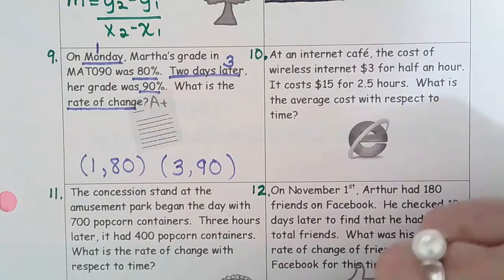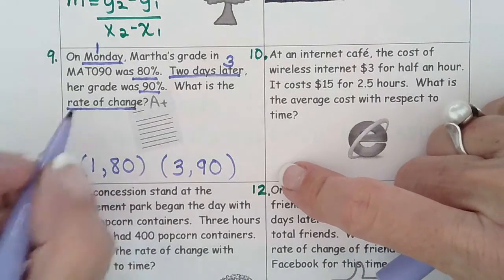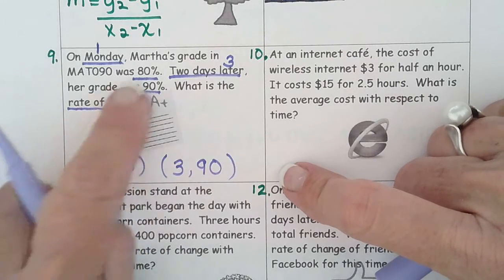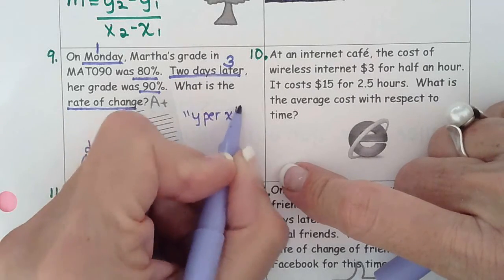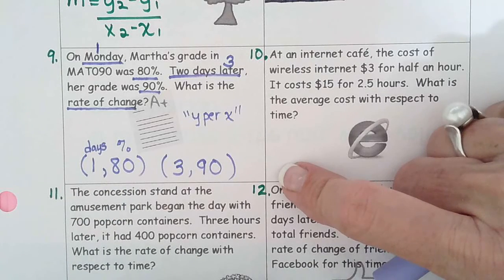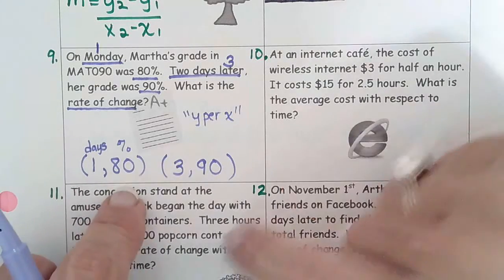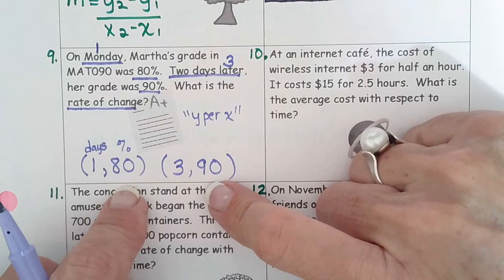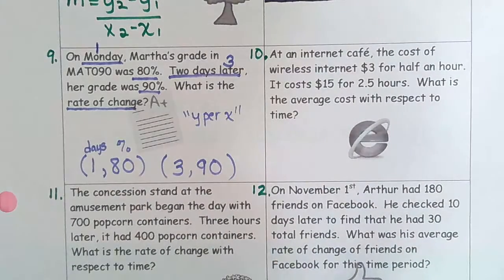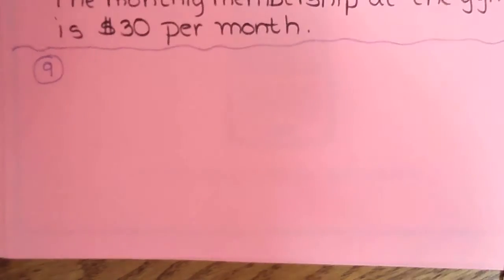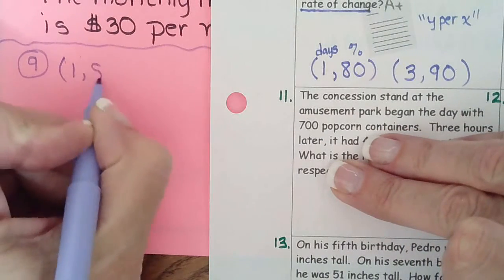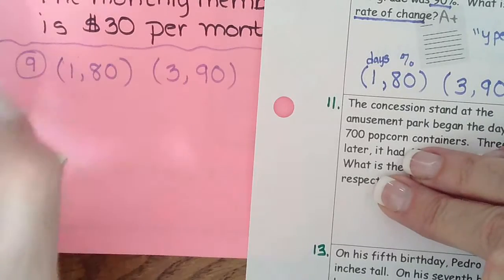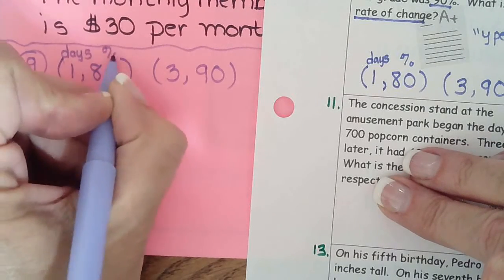What is the rate of change? We want to know y per x. X is days and y is percent, so we want to know percent per day — how much is her percentage increasing per day? She could be increasing by five percent per day or whatever it turns out to be. Let's translate this over to our page. We have the ordered pairs (1, 80) and (3, 90), where x is days and y is percent, so y per x will be percent per day.